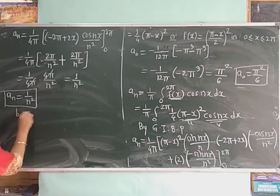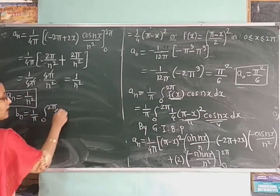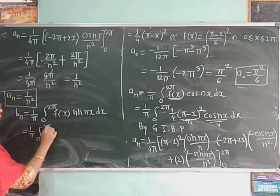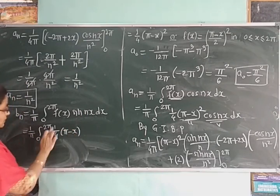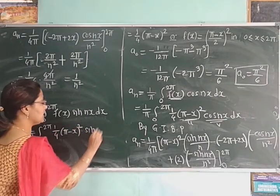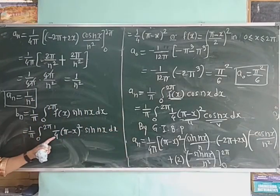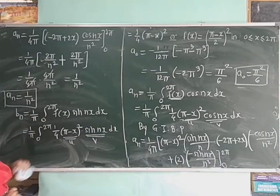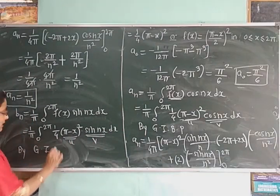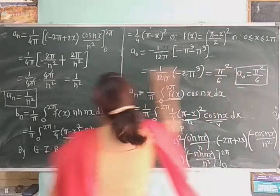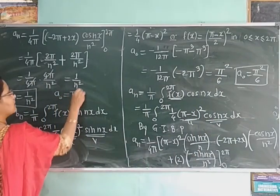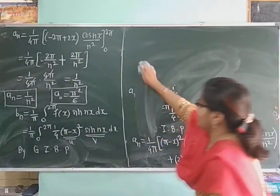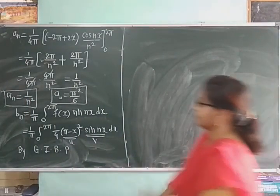Now we find Bₙ. The formula is Bₙ = (1/π) ∫₀²π f(x) sin(nx) dx. Substituting f(x) = (1/4)(π − x)², this becomes (1/4π) ∫₀²π (π − x)² sin(nx) dx. We again apply generalized integration by parts.